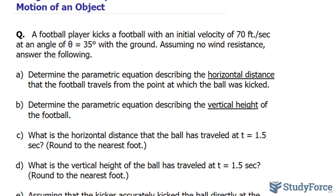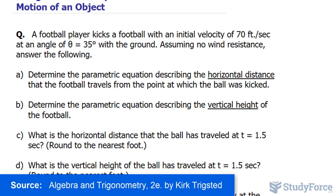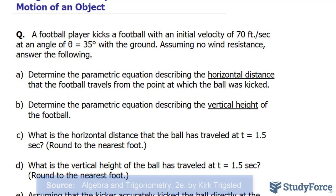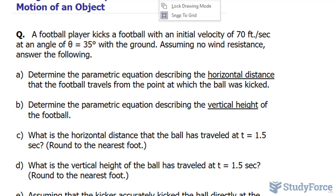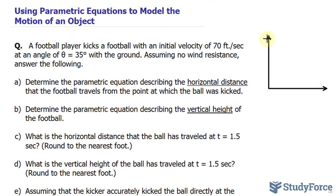Part A reads: determine the parametric equation describing the horizontal distance that the football travels from the point at which the ball is kicked. I'll illustrate what's happening using an XY plane. This represents the height in feet, H, and this represents the horizontal distance, X.